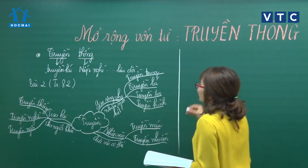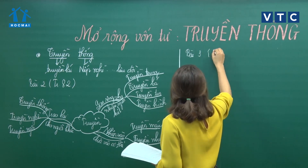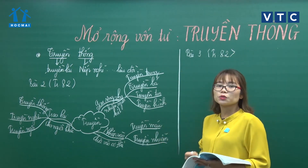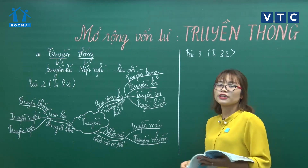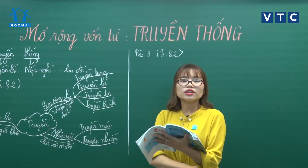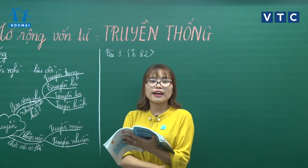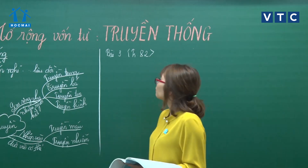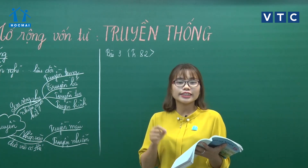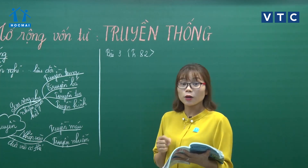Bài số 3. Nếu làm tốt hai bài này, các con đã nắm khá vững những nội dung kiến thức liên quan đến mở rộng vốn từ về truyền thống. Bài tập 3: tìm trong đoạn văn sau những từ ngữ chỉ người và sự vật gợi nhớ đến lịch sử và truyền thống dân tộc. Mình cần tìm 2 nhóm từ: nhóm từ chỉ người và nhóm từ chỉ sự vật gắn liền với lịch sử và truyền thống.